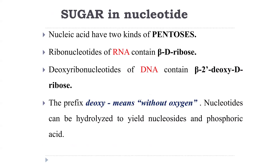Regarding sugars in nucleotides: there are two types — ribose and deoxyribose. The ribose sugar of RNA is beta-D-ribose. DNA contains beta-2'-deoxy-D-ribose. The prefix 'deoxy' means without oxygen — at carbon-2 of the sugar, there is no oxygen, which is why it is called deoxyribose.